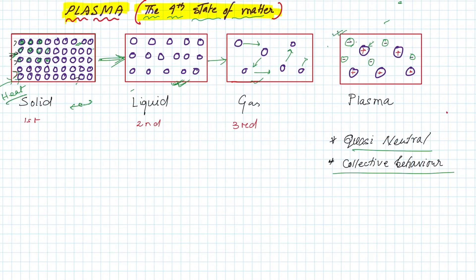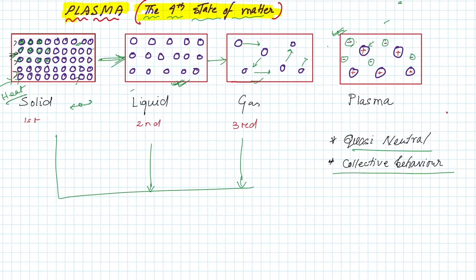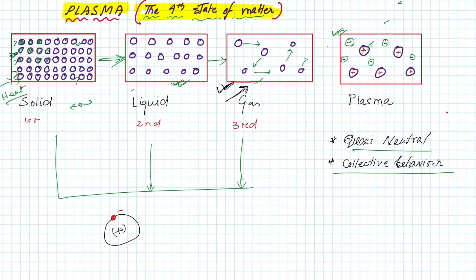What is the fourth state — plasma — and how does it differ from the other three states? In solid, liquid, and gas, the particles are neutral. If they are atoms, the negatively charged electrons are orbiting around the positively charged nucleus. Electrons are not free in these three states. But when a substance in the gaseous state has its neutral particles heated further and you continue supplying heat, we reach a new stage.